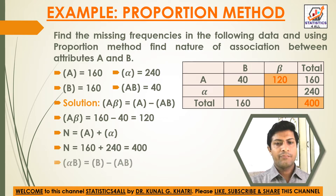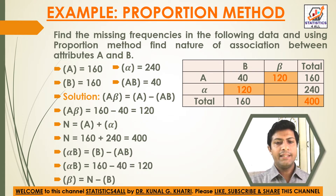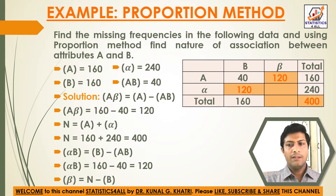Now, alpha_B = B minus AB. B = 160, AB = 40, so alpha_B = 160 minus 40 = 120. Beta = N minus B. N = 400, B = 160, so beta = 400 minus 160 = 240.